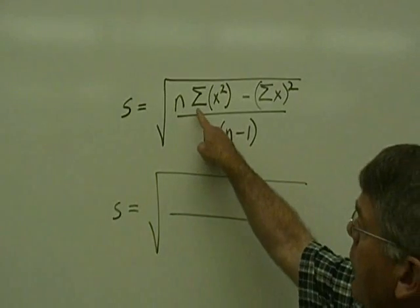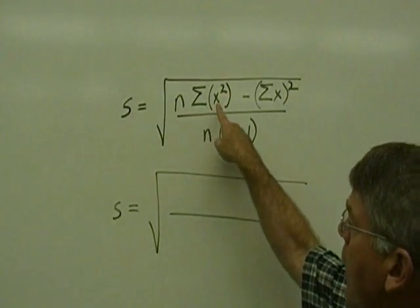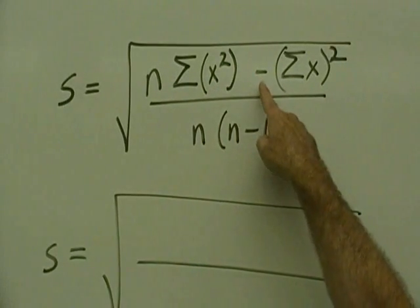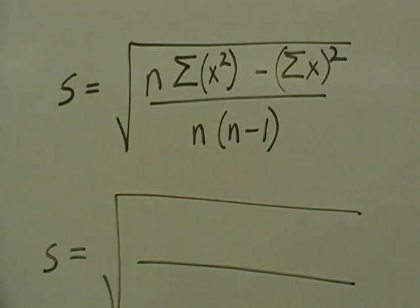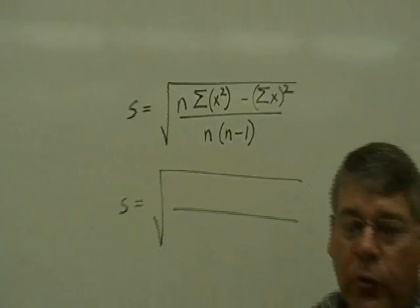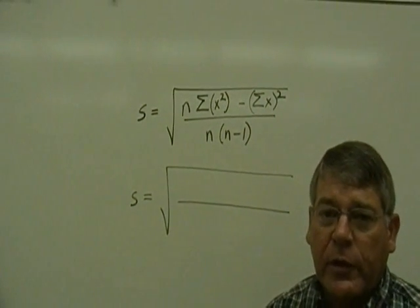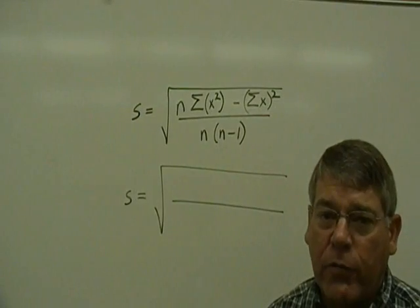Now, notice in the formula here that we have the sum of x squared minus the sum of x, the quantity squared. The number one mistake in this problem is to confuse those two, and so they are completely different numbers. Let's review how we get each of those.